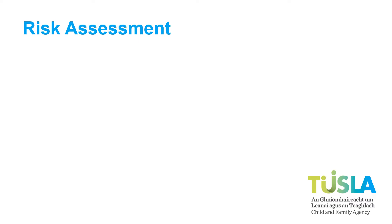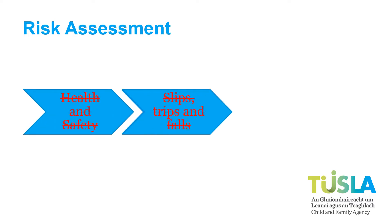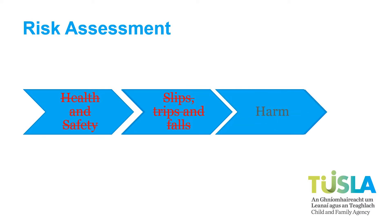All Child Safeguarding Statements must include a Risk Assessment. This is not a Health and Safety Risk Assessment — it does not focus on slips, trips, and falls. For your CSS, you are assessing the risk of harm, as defined in the Children First Act, to a child while they are with you. So, what does this mean?